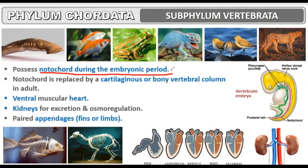In vertebrates, the notochord is present in the embryological period. In Urochordata, it was present only in the larval stage. In Cephalochordata, it was present throughout life without converting to any other structure. Both Urochordata and Cephalochordata are found only in the marine habitat. In Vertebrata, the notochord present in the embryonic stage is then converted into a cartilaginous or bony vertebral column in the adult.